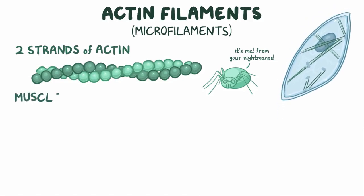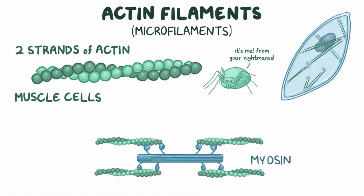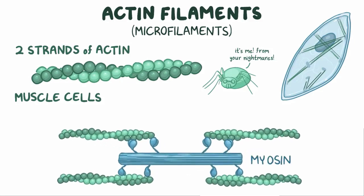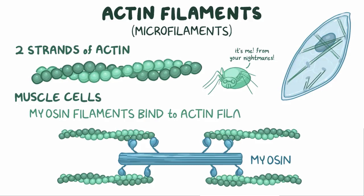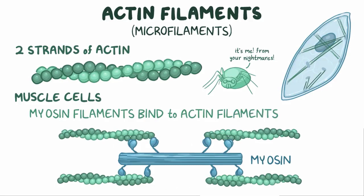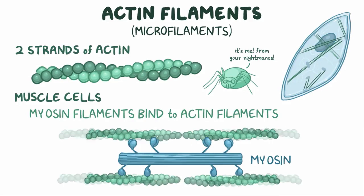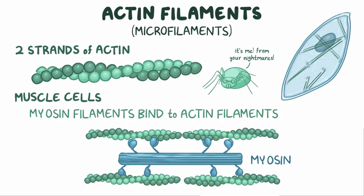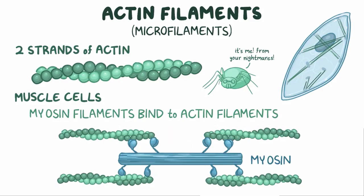Not surprisingly, the muscle cells have plenty of actin, as well as another protein called myosin. Myosin filaments bind to actin filaments, and that's what allows the actin to slide closer together and further apart, and ultimately that makes the muscle cells shrink and stretch during muscle contraction and relaxation.